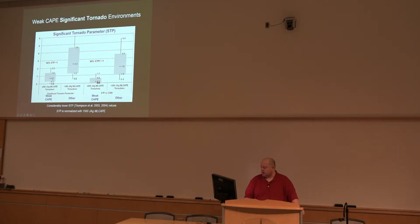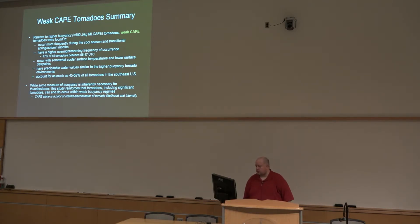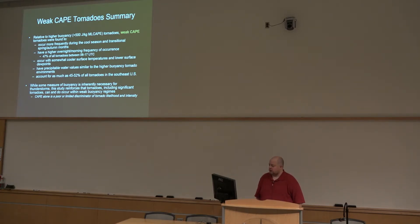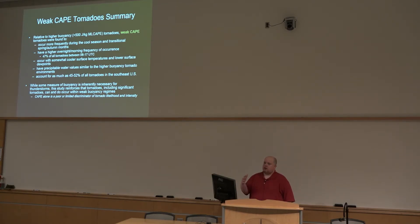So relative to higher buoyancy cases, weak CAPE tornadoes were found to occur more frequently during the cool season and transitional spring-autumn months, with higher overnight and early morning frequency. Roughly half of all tornadoes occurred between 6Z and 17Z. They tend to occur with somewhat cooler surface temperatures and lower dew points. However, precipitable water values do tend to be somewhat similar to the higher CAPE cases, and if you look at things like 0-to-3-kilometer CAPE and precipitable water, they're really not all that different — but the total CAPE actually looks quite different.